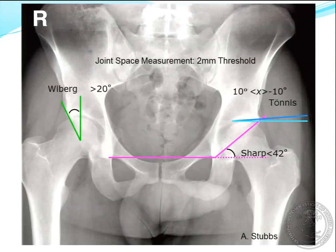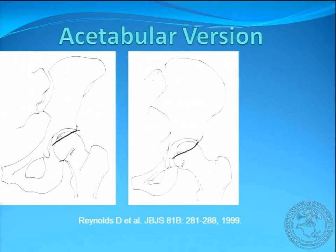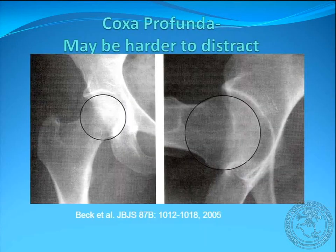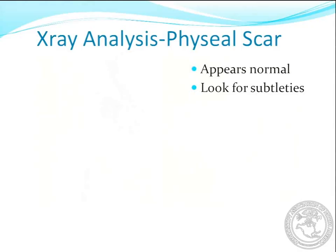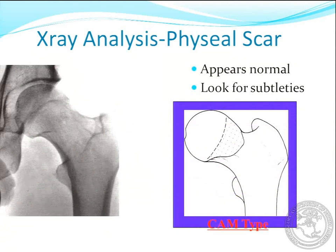This is from Alice Stubbs — it shows you all the various things you want to look at, including the taunus angle, CE angle, Weiberg, Sharpe's angle, and others, to really pay attention to all the fine details of the hip as you're looking for problems. You need to look at version because you might mistake anterior overgrowth of the rim for retroversion — you don't want to make that mistake. Look for coxa profunda or deep hip socket, because if you're going to scope this it may be harder to distract. Analyze the foveal scar as well as the cam bump.